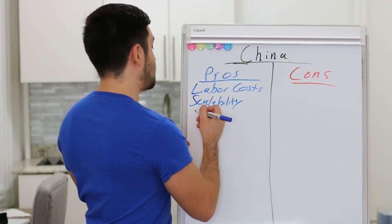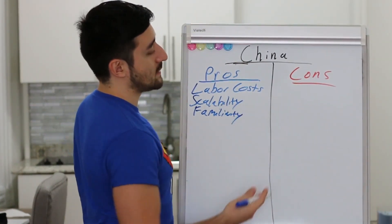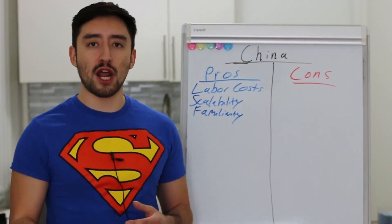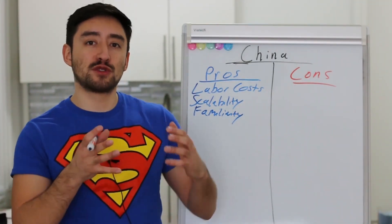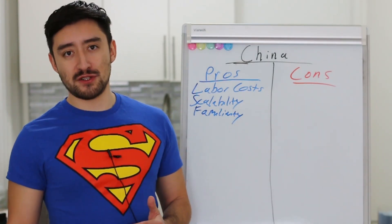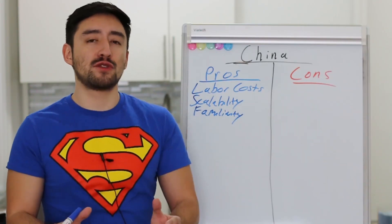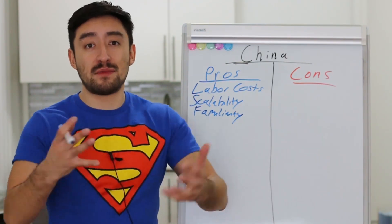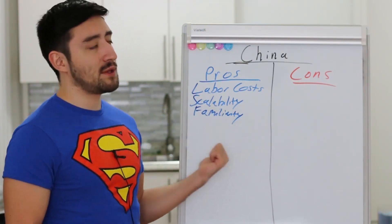Another big pro or advantage to China is familiarity. Familiarity with a product — because factories in China have manufactured so many different types of products over the years, there's a really good chance they will have created a product that's similar to yours or one that's in the same industry. So they have some knowledge when it comes to how to actually manufacture this effectively, how to do it quickly and cheaply, and they're really good on the familiarity front.